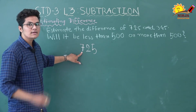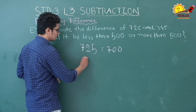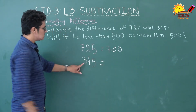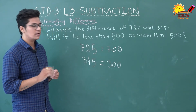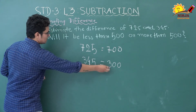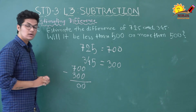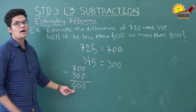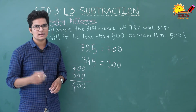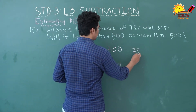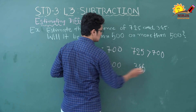Our first number is 725. In the hundreds place we have 7, so its place value is 700. For the second number 345, in the hundreds place we have 3, so its place value is 300. Now 700 minus 300 gives us 400. So our estimated difference is 400, which is less than 500.